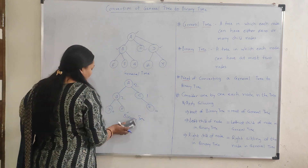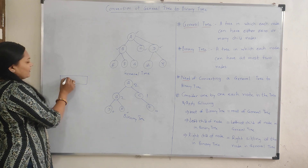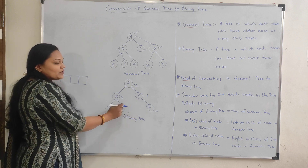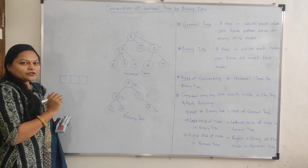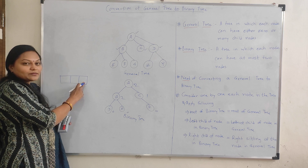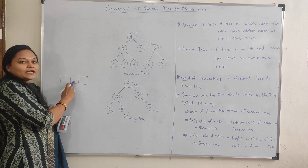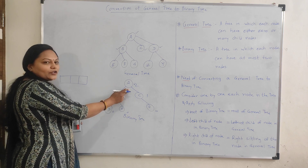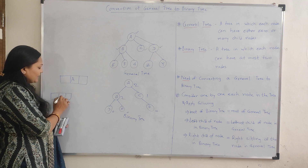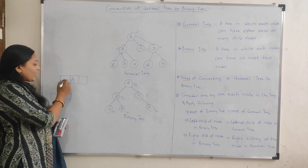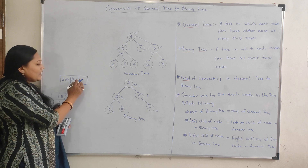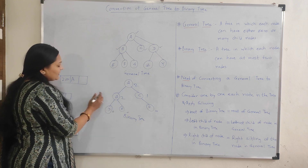To store a tree in computer memory, we use a linked list and consider the node structure. Each node has three fields: the first field contains the address of the left child, the second field contains the address of the right sibling, and the middle field contains the data. For example, for node A, data is A, left child address is B at address 200, and right sibling is C at address 300.